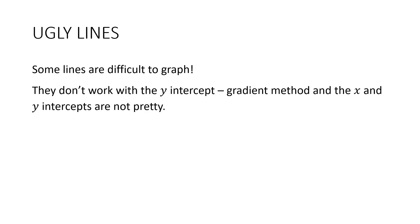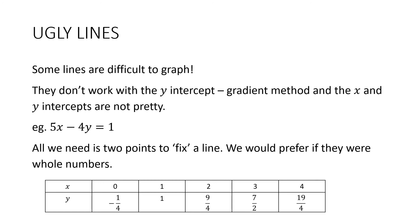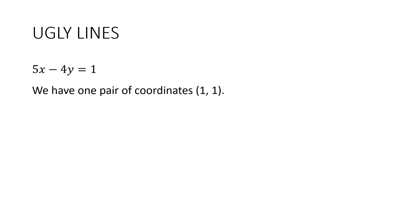Now, some lines are just difficult to graph. They don't work with the y-intercept gradient method, and the x and y-intercepts are not pretty. Like this one: 5x take 4y is equal to 1. Have a look at what happens when I try to find the x and y-intercepts. If I substitute in y equals 0, x is equal to 1 fifth. If I substitute in x equals 0, y is equal to negative 1 quarter. Nobody wants to graph those two points. All we need is two points to fix the line, but we would prefer if they were whole numbers. Looking at our table of values — other than the point 1, 1, they're all unpleasant. But there is good news: if you can find one pair of integer coordinates, and we did find one — that's 1, 1 — then you can use the gradient y-intercept method to find another point.